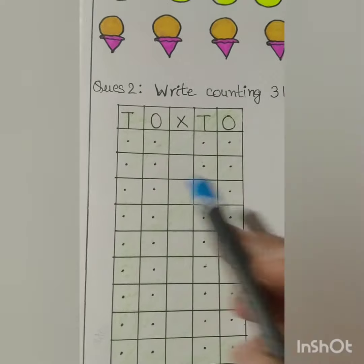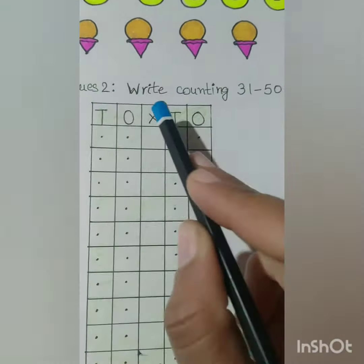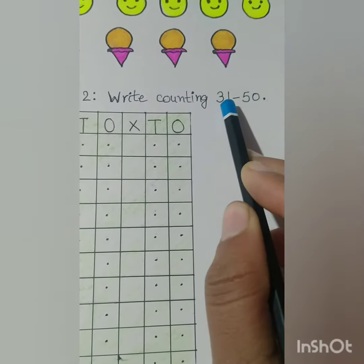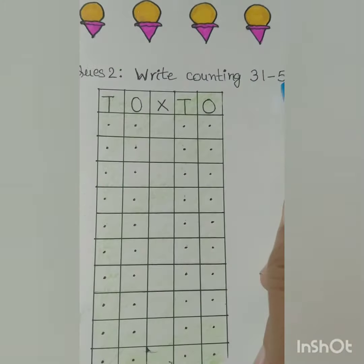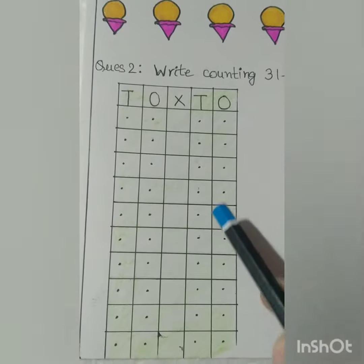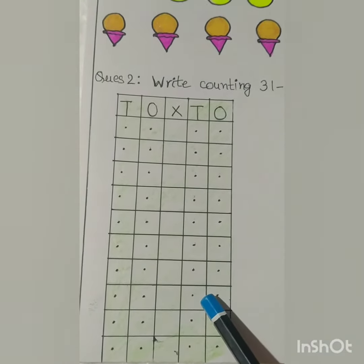Next, question number two: write counting 31 to 50. Children, in these boxes you will write 31 to 50 — the counting.